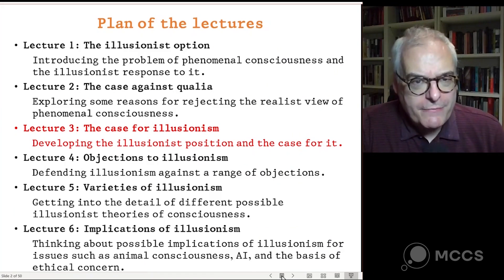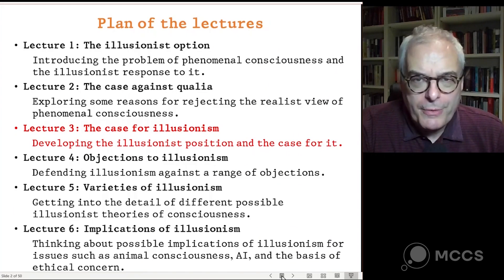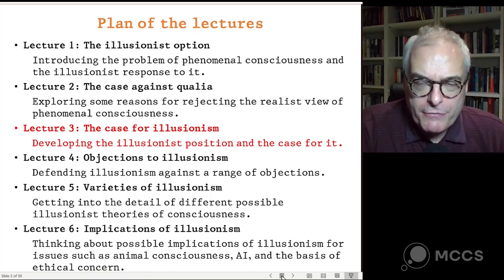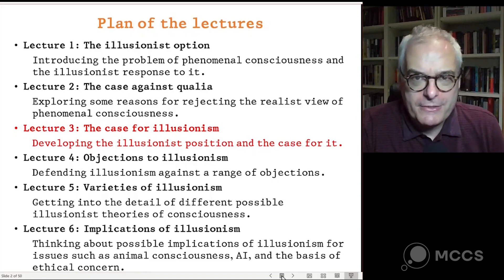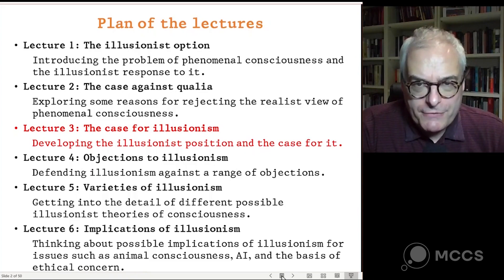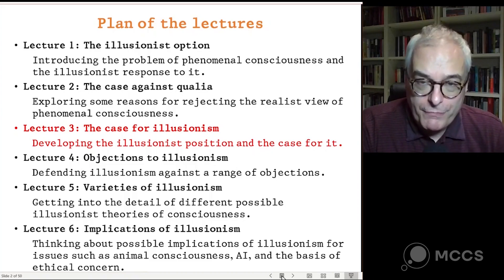Just to remind you of the plan of the lectures: in the first lecture we looked at the problem of phenomenal consciousness. The problem arises because it seems that consciousness involves direct awareness of mental qualities distinct from the qualities of things we're aware of in the world. This seems to present a hard problem. The illusionist response is to deny that picture of consciousness — to deny that consciousness involves direct awareness of mental qualities, qualia, phenomenal properties, what-it-is-likenesses — the various labels that are used.